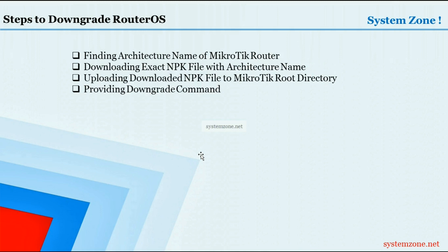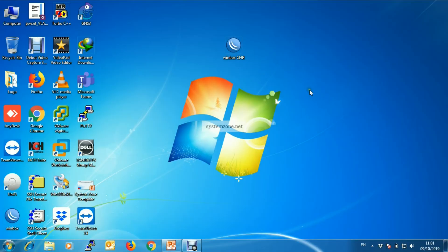To properly downgrade MikroTik RouterOS, we have to follow some steps. First, we have to find the architecture name of the MikroTik router, then we have to download the exact NPK file with that architecture name, then upload that downloaded file to the MikroTik root directory, and then provide the downgrade command. So let's start — first, login to the MikroTik router with Winbox.